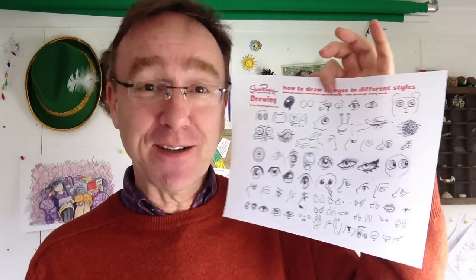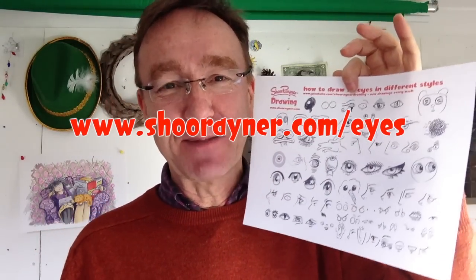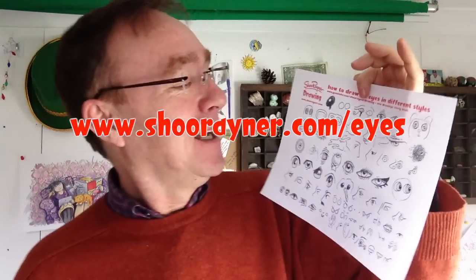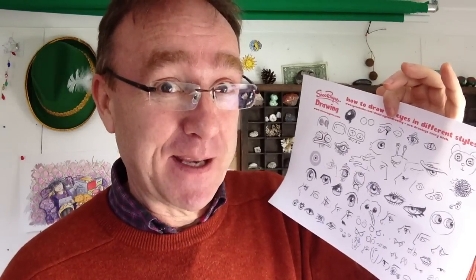It's the Shoe Rainer Drawing Channel. Today I'm going to show you how to draw 72 different kinds of eyes and here they all are on a sheet that you can download from my website www.shoerainer.com slash eyes. Let's not talk about it anymore. Let's do it!